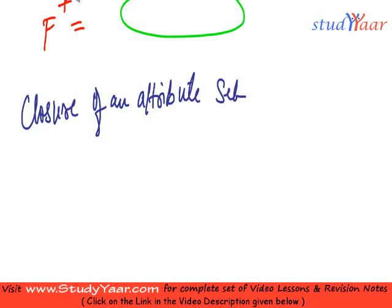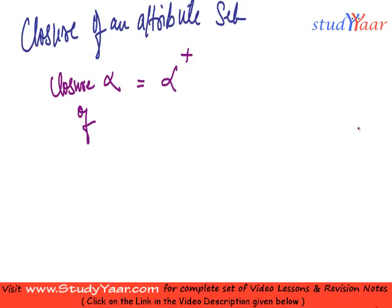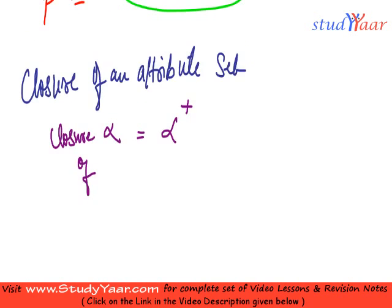Let's suppose I denote my set of attributes as alpha. Then closure of alpha is denoted as alpha plus. Just as we had a set of FDs as F, then closure of that set of FDs was denoted as F plus. So what is a closure of an attribute set?